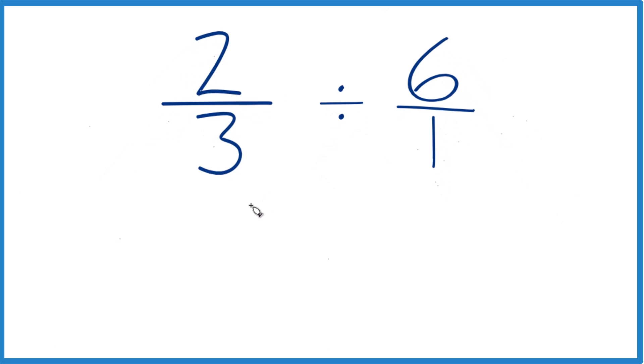Then we take the two-thirds, and instead of division, we're going to multiply by the reciprocal of six over one. Take the numerator, move it to the bottom, denominator goes to the top. So we have one over six. One over six, that's one-sixth.